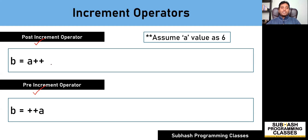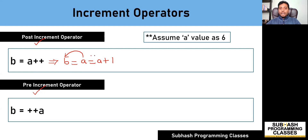Now let us see what is the difference between the post increment operator and pre increment operator. If you get an expression like b = a++, which involves the post increment operator, this can be considered as: b = a; a = a + 1. So it means first store the value of a into b, and then increment the value of a. If the initial value of a is 6, then 6 gets stored into b and then a is incremented to 7.